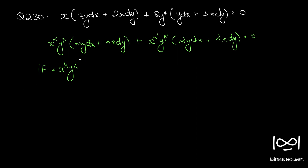Anyway, I am assuming it is not exact and let's find the integrating factor using Rule 6. If x raise to h and y raise to k is the integrating factor, let's multiply throughout with x raise to h and y raise to k and group the dx and dy terms together.